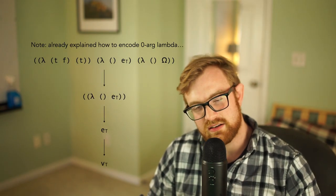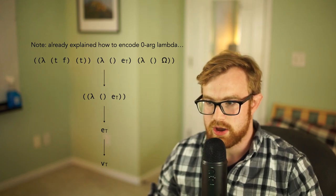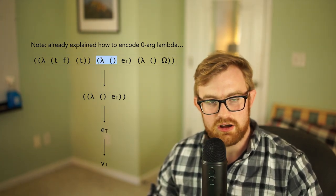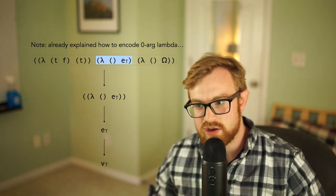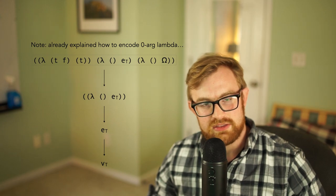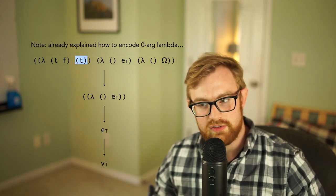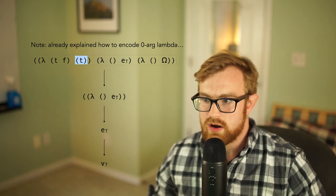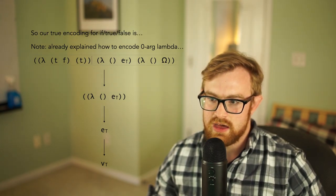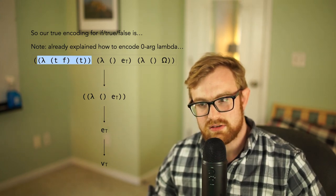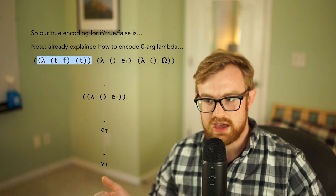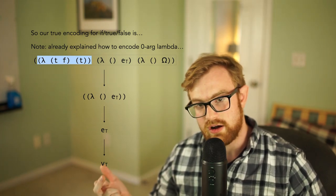We're going to stick a lambda in front of the true branch and the false branch, which is then going to put them in weak head normal form so that then call-by-value languages will not evaluate them until we actually evaluate them in either true or false. So that's why this is going to work. Our encoding for true is going to be this lambda that takes two arguments and calls its first argument. Our encoding for false is going to be a lambda that takes two arguments and returns its second argument, or calls its second argument, not returns.